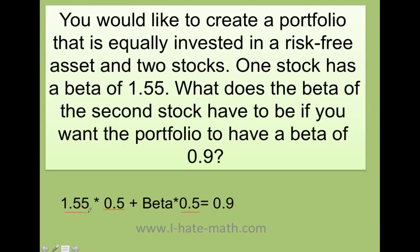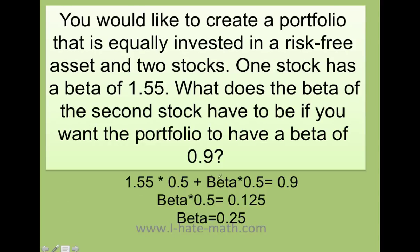So I'm going to do 1.55 — that's the beta of the first stock — times 0.5, plus the unknown beta times 0.5, and that should equal 0.9. Then I can solve for beta. I do 1.55 times 0.5 and move it to the other side. So I have 0.9 minus 0.775, which gives me 0.125. Finally, I do the division and I get the beta needed for this portfolio to have a beta of 0.9.